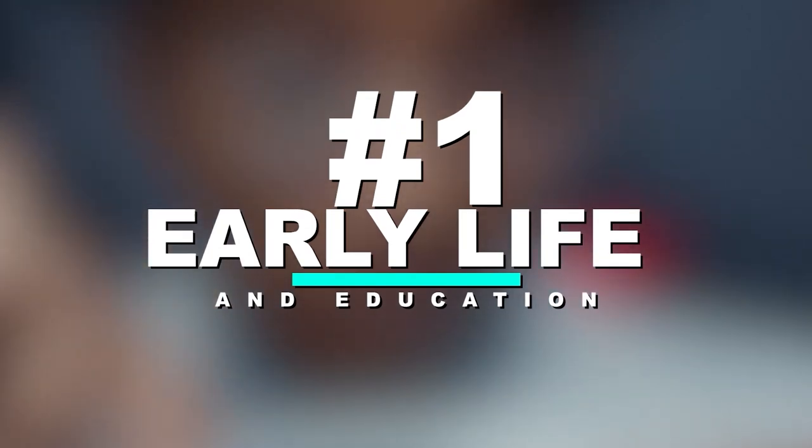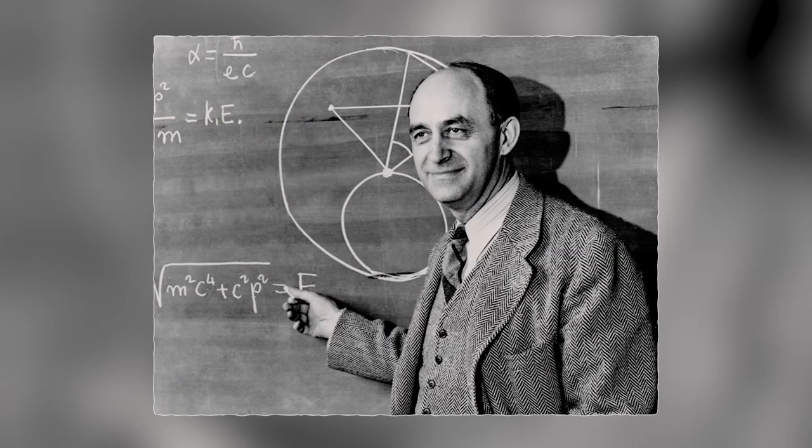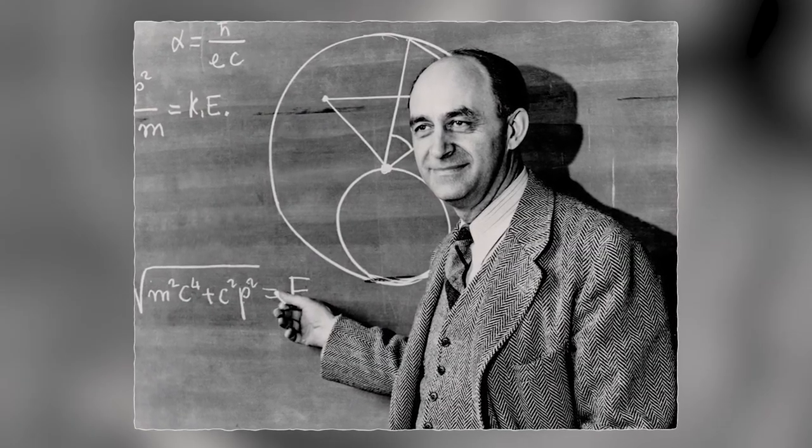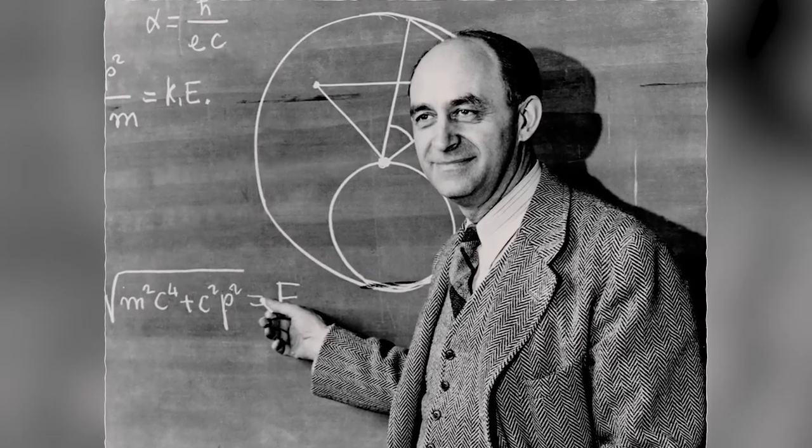Early Life and Education. Enrico Fermi was born in Rome, Italy, on September 29, 1901, to a middle-class family.